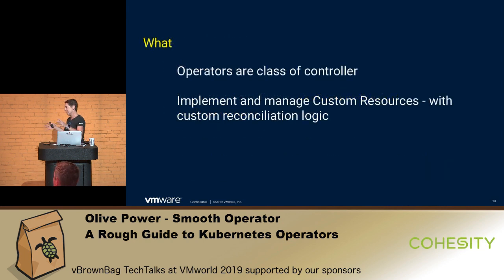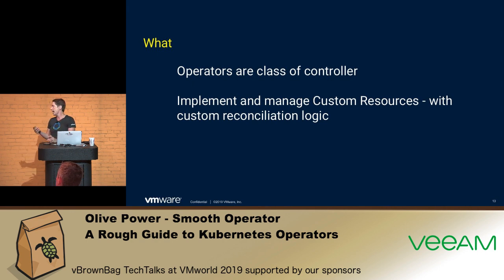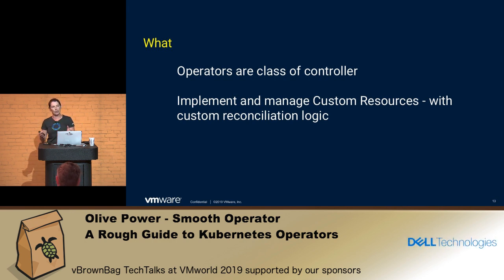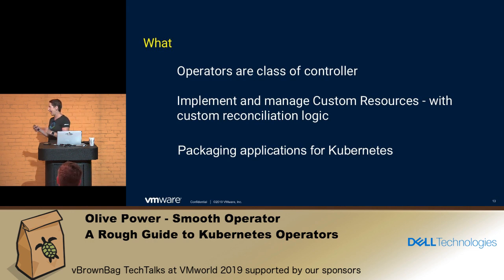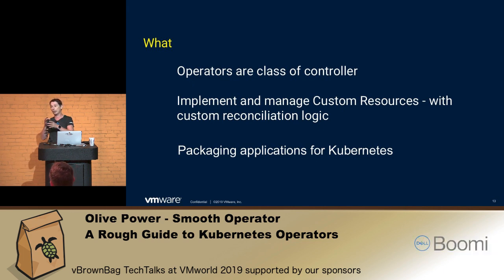This leads us to what an operator is. An operator is a class of controller — remember, the controller is the thing that keeps looping to check whether your resource of interest is at the desired state. An operator manages your custom resources with your own custom reconciliation logic. Kubernetes has inbuilt resources and inbuilt controllers; operators are the controllers that look after your custom resources. It's your code reconciling your custom application to be the way you want it to be — basically a way of packaging applications for Kubernetes so that Kubernetes is managing your custom application the same way it manages its own inbuilt resources.